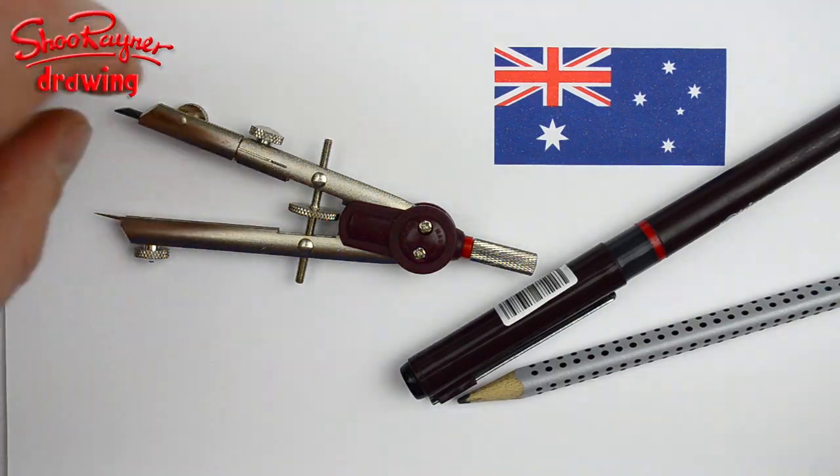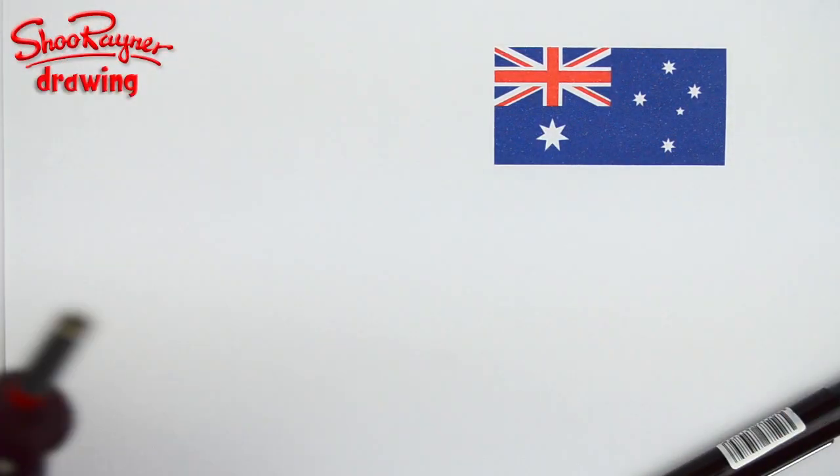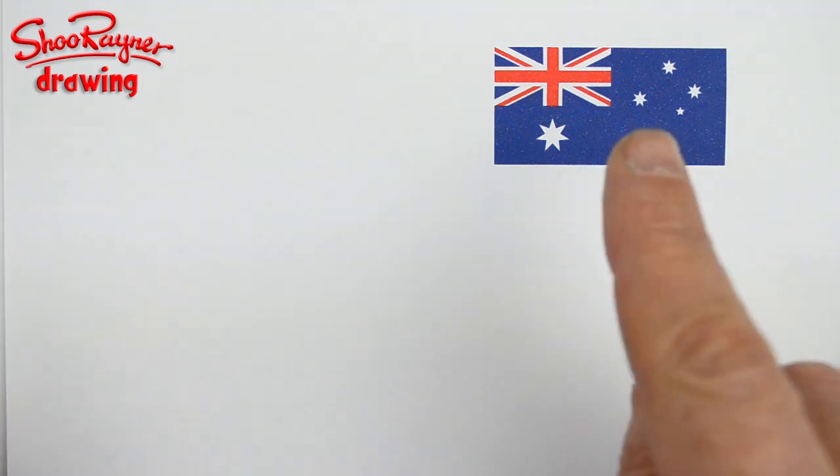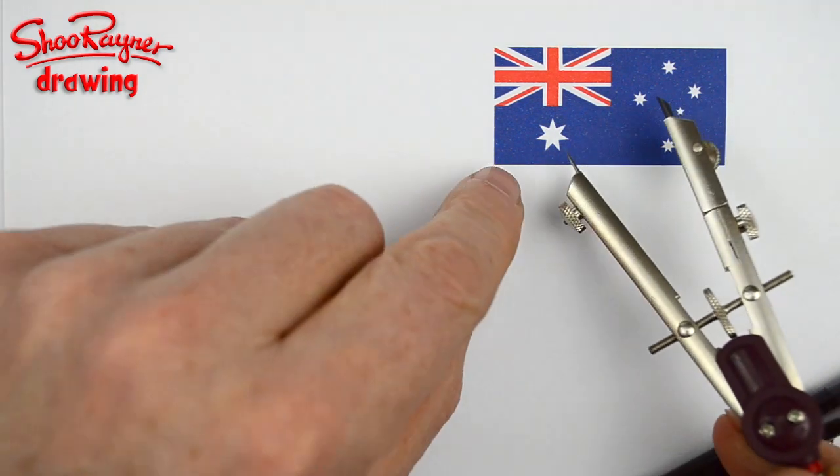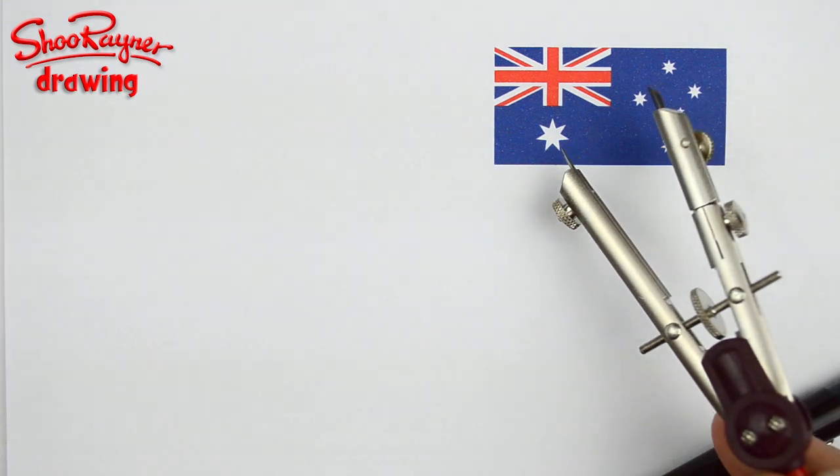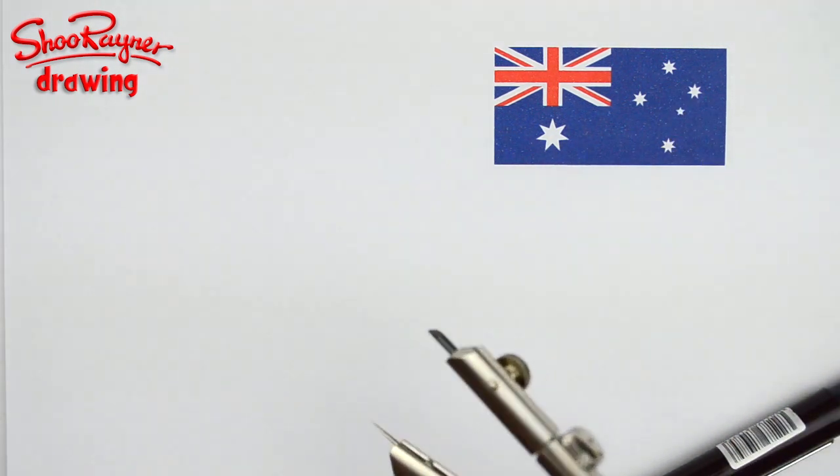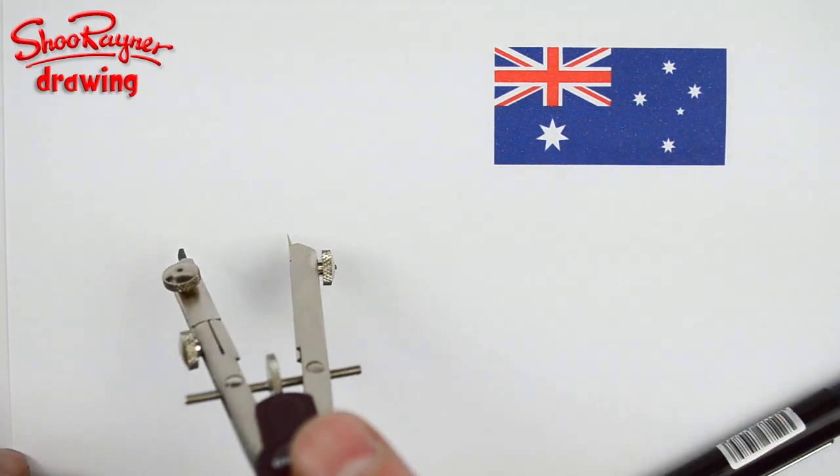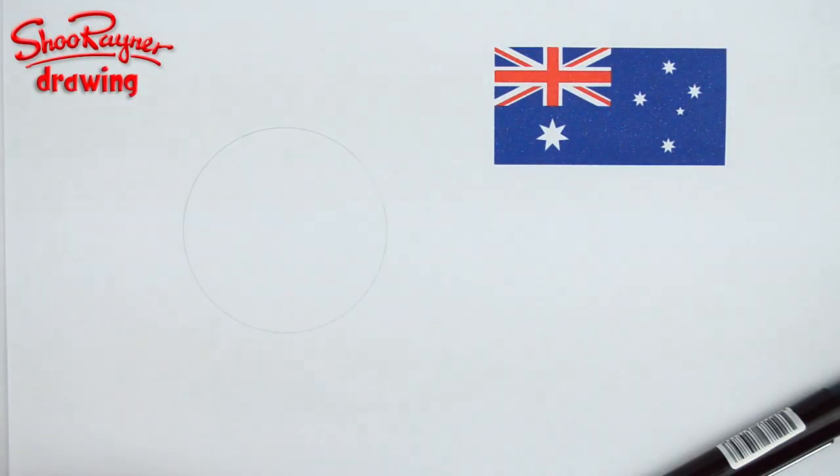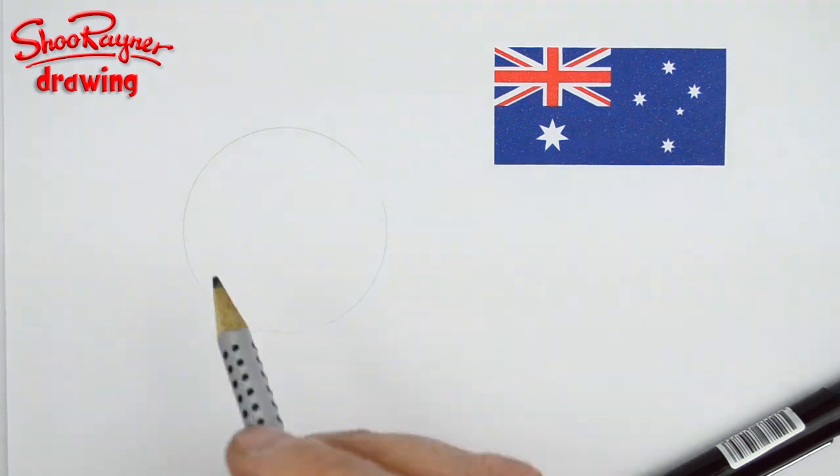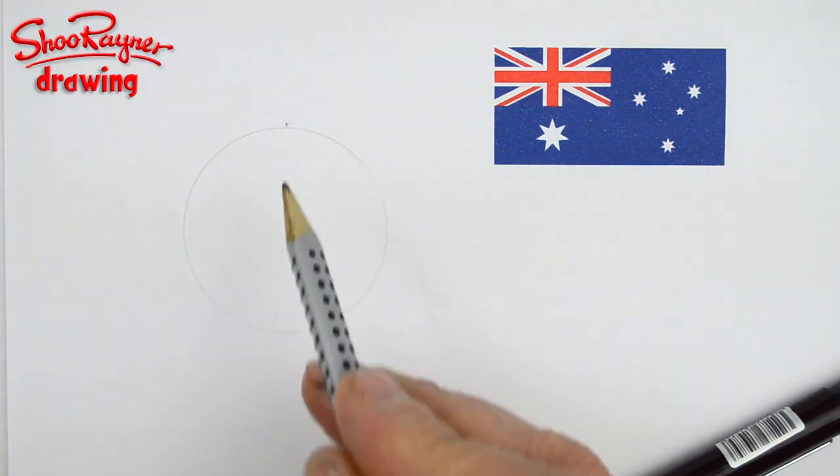Hi there, welcome to the Shoe Rainer Drawing Channel on YouTube. Today just happens to be Australia Day, and the Australian flag has these seven-pointed stars which are quite unusual really. You don't see seven-pointed stars that often, so I'm going to show you how to draw them very quickly, just how to think about them.